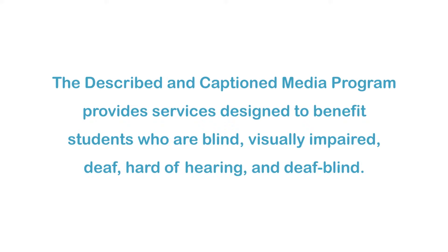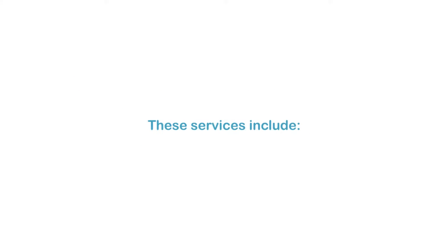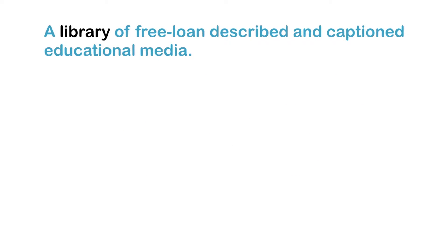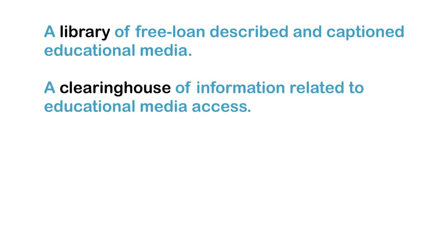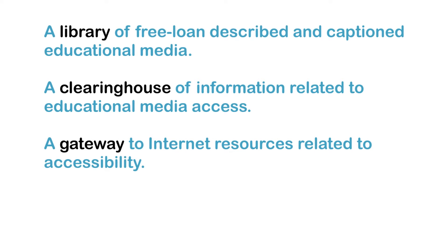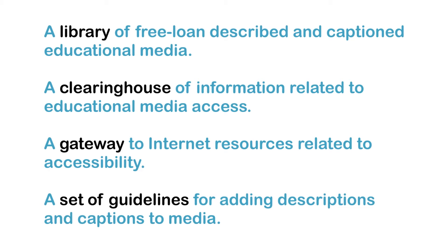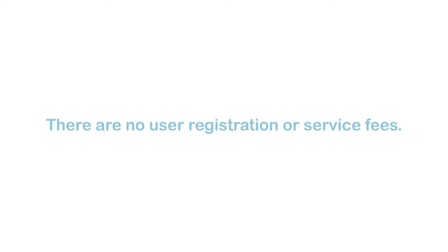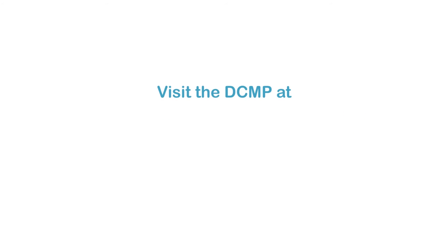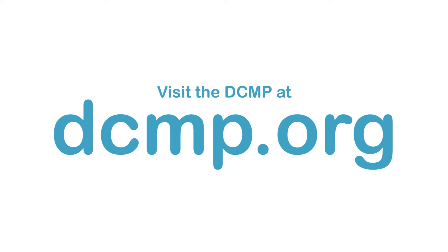The Described in Caption Media Program provides services designed to benefit students who are blind, visually impaired, deaf, hard of hearing, and deafblind. These services include a library of free loan, described, and captioned educational media; a clearinghouse of information related to educational media access; a gateway to internet resources related to accessibility; and a set of guidelines for adding descriptions and captions to media. There are no user registration or service fees. Visit the DCMP at dcmp.org.